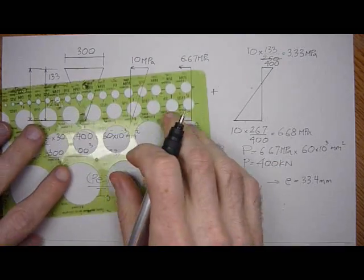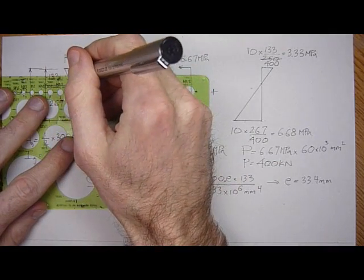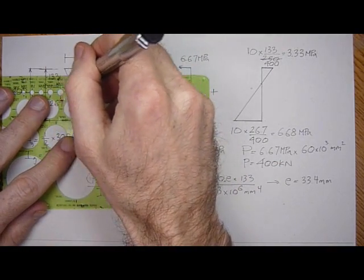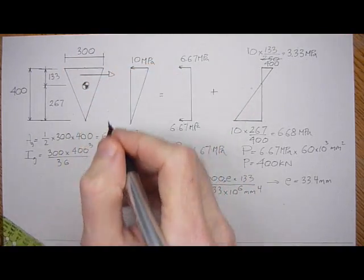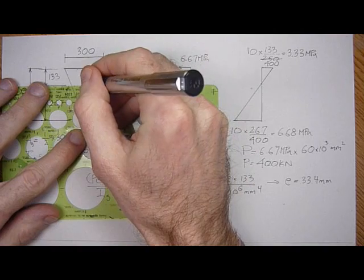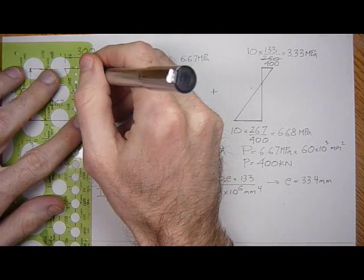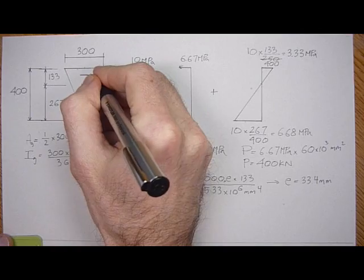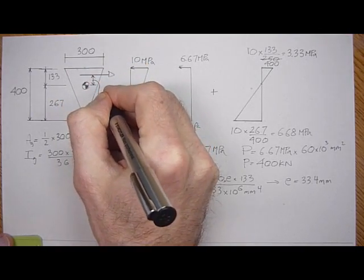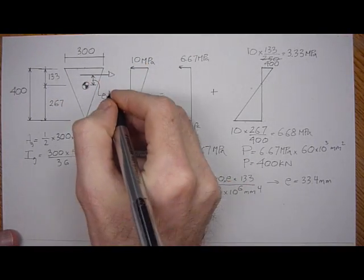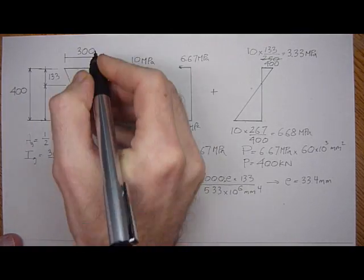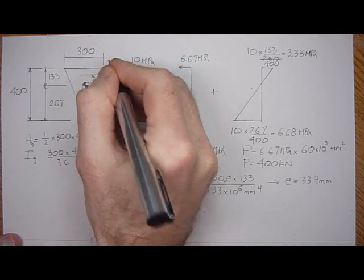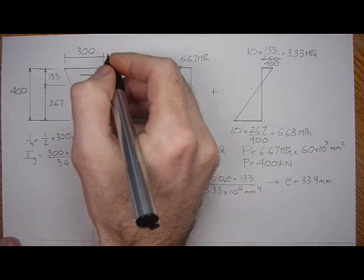So we can write out the axial load right on the diagram here. We know what the resultant is now. This force P acts at an eccentricity E, which is this, this is E here, of 33.4, and the P is 400 kilonewtons.